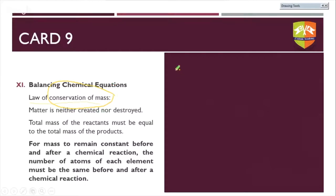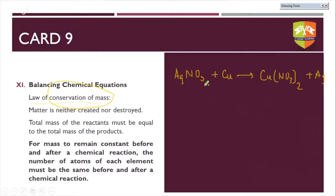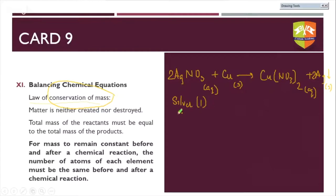Taking our AgNO₃ + Cu → Cu(NO₃)₂ + Ag example: AgNO₃ is aqueous, Cu is solid, Cu(NO₃)₂ is aqueous, and Ag is solid. NO₃ is not balanced, so we put a coefficient of 2 before AgNO₃. Now silver is in excess, so we put a coefficient of 2 before Ag and write a deposition symbol. This gives a complete balanced chemical equation.